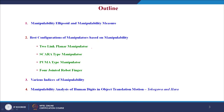Today we are going to see the fundamentals of robot manipulability. The outline covers: the definition of the manipulability ellipsoid and manipulability measure; best configurations of manipulators based on manipulability index, including examples of the two-link planar manipulator, SCARA type, PUMA manipulator, and the four-jointed robotic finger; various indices of manipulability measure; and finally, research by Yokogawa and Hara in 2004 on the manipulability analysis of the human thumb and index finger.